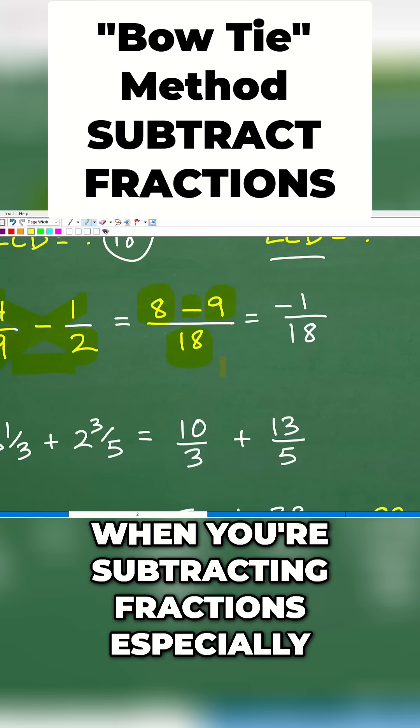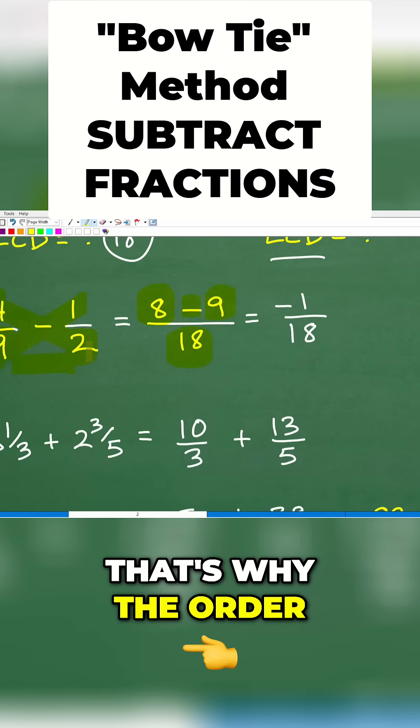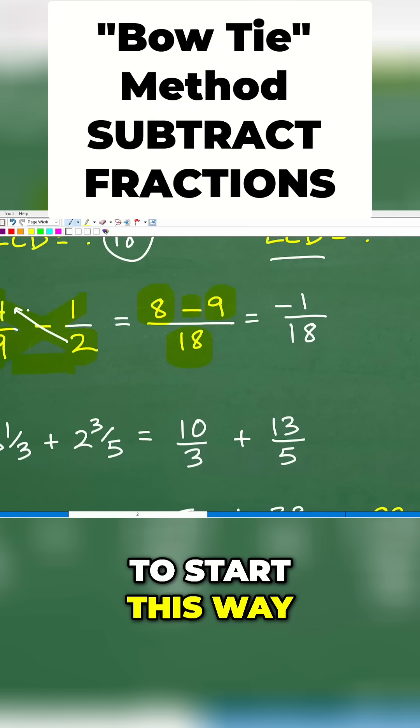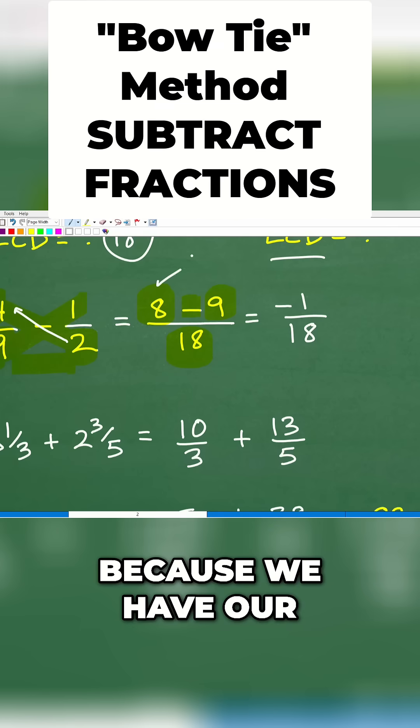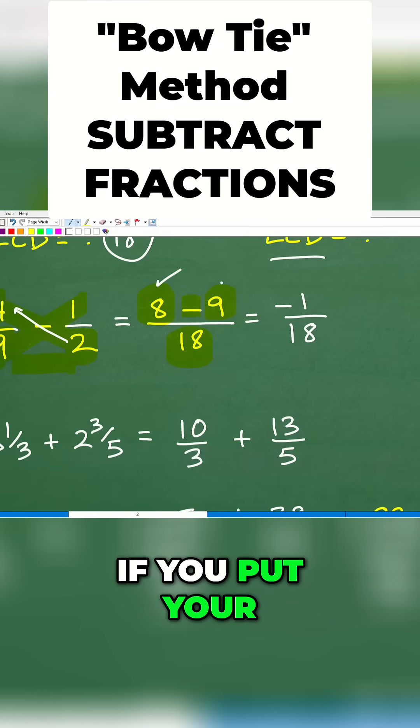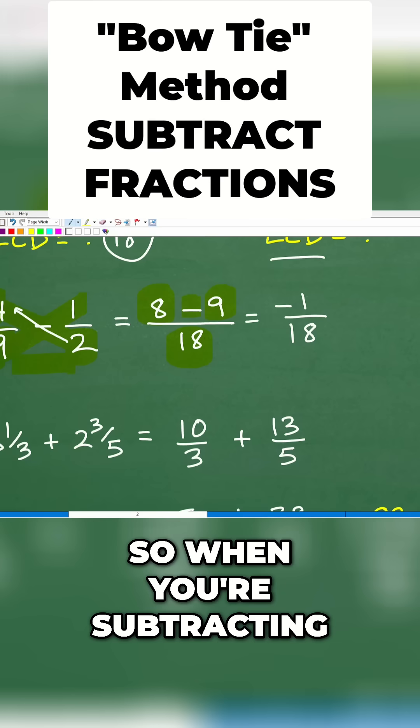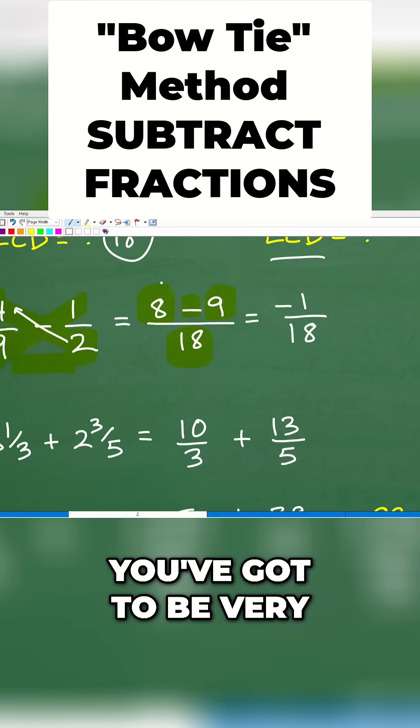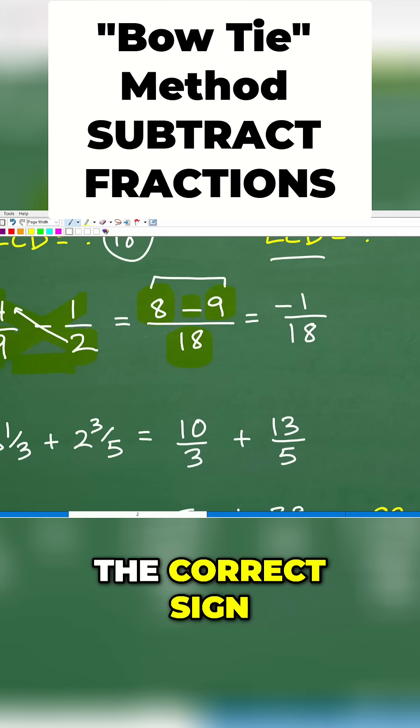Now, when you're subtracting fractions especially, that's why the order is very, very important. That's why you have to start this way, because we have our 8 there. If you put your 8 right here, you would have a different sign. So when you're subtracting fractions or subtracting any number, you've got to be very, very careful that you have the correct sign.